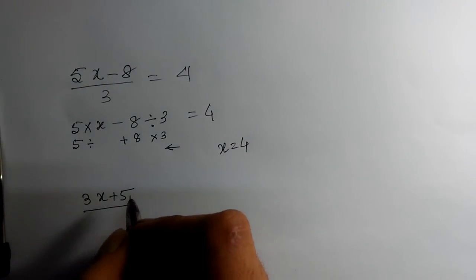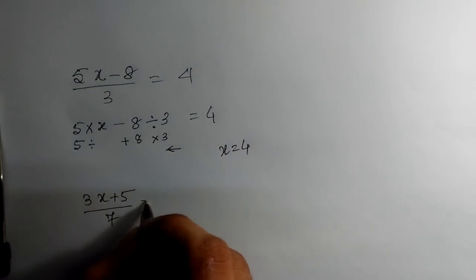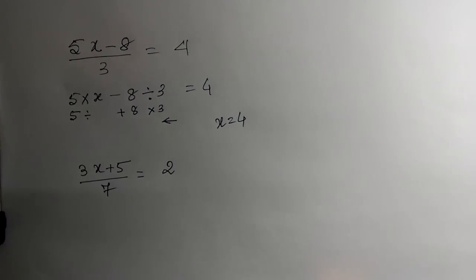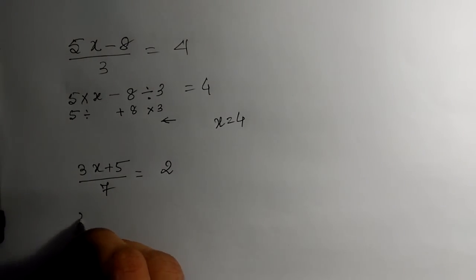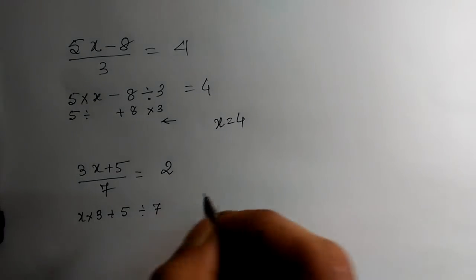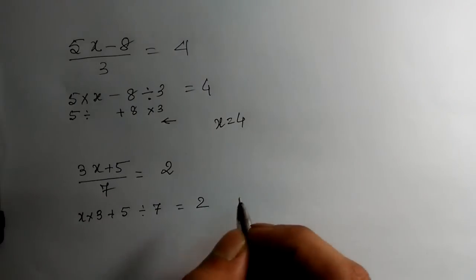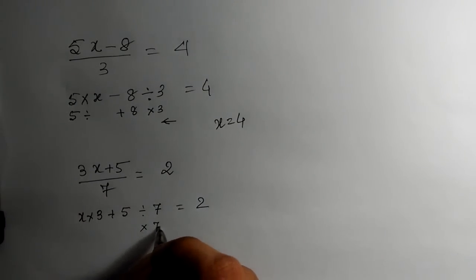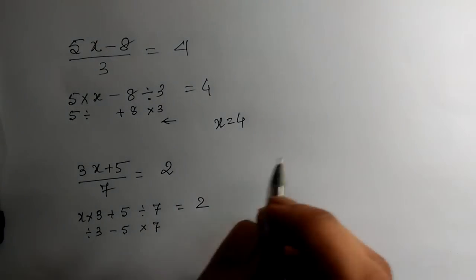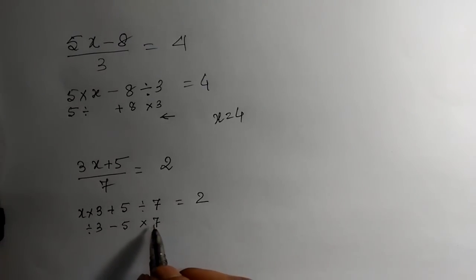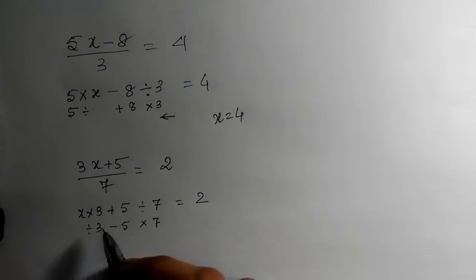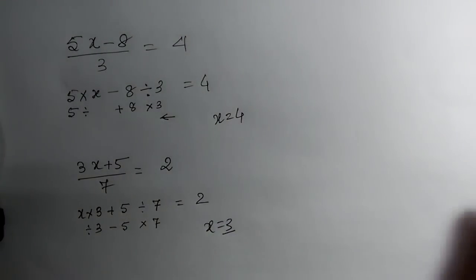Let us take another example: (3x + 5) / 7 = 2. Here, x is multiplied by 3, then added by 5, then divided by 7. To reverse: multiply by 7, then minus 5, then divide by 3. So 2 × 7 = 14, minus 5 is 9, divided by 3 is 3. So x = 3.